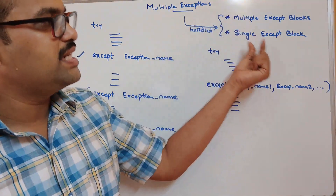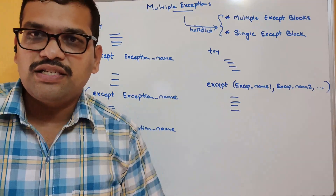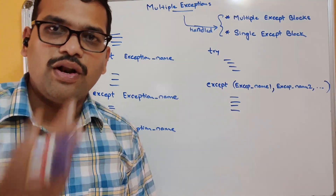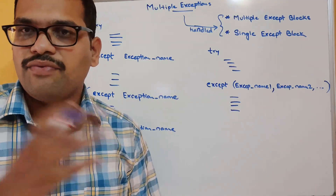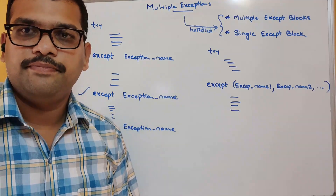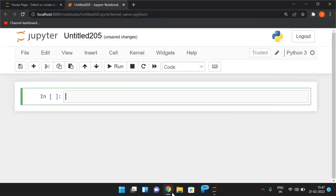Now I will demonstrate with a small example how to handle multiple exceptions using both a single except block and multiple except blocks. Let's move on to the system. So we have just seen the theoretical part of handling multiple exceptions in Python, and now I will show you with a small example.